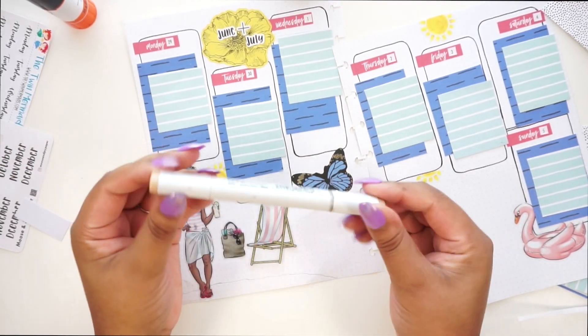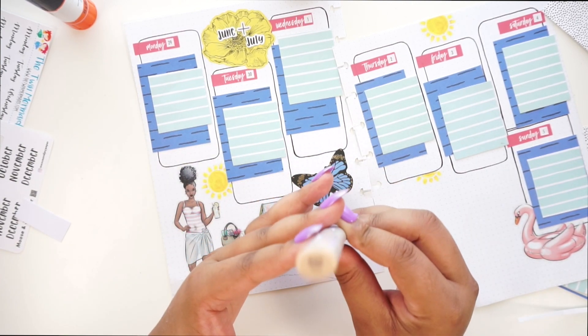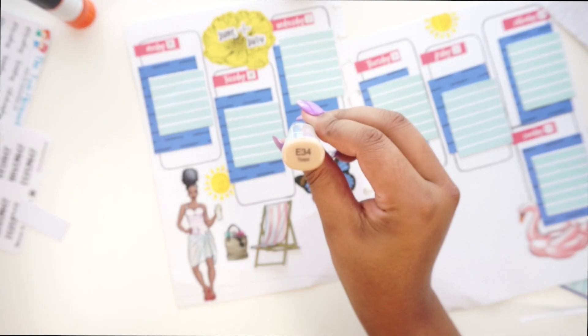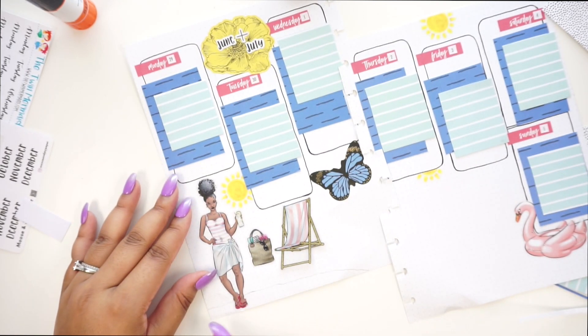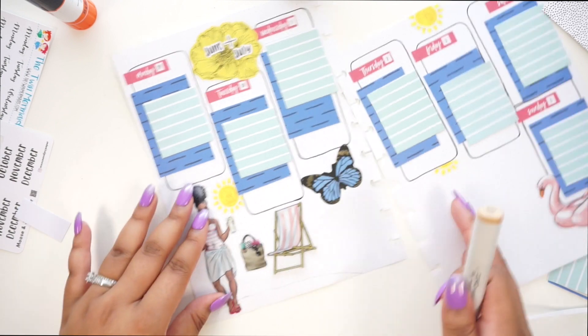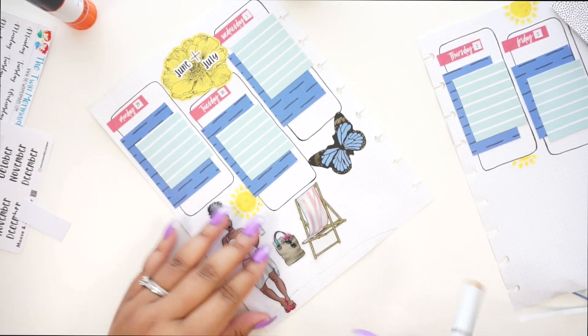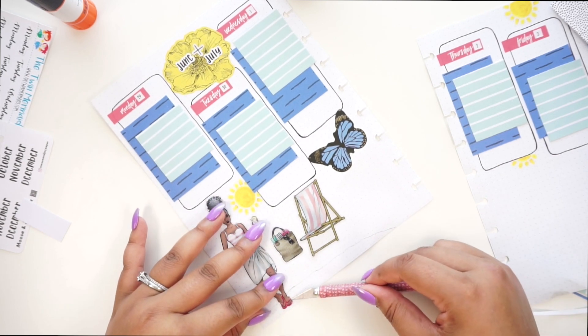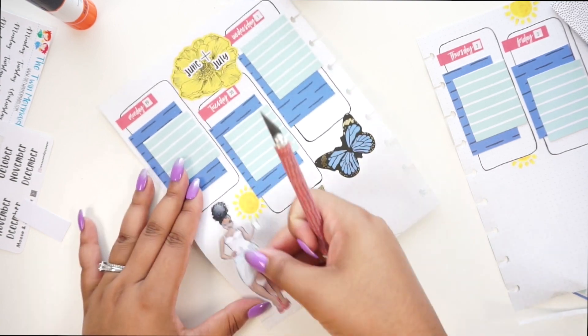Okay, so I have my Copic marker here and this is in the color Toast E34. Yeah, so I decided to just draw like a little background behind the stickers because I wanted some sand. And then I'll put the beach chair and everything behind her on top of the sand after I put the marker down. So let's do that.